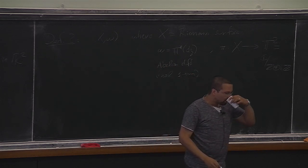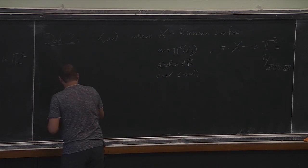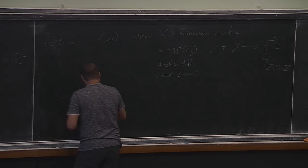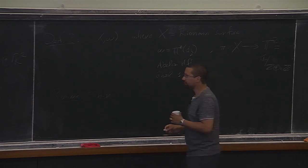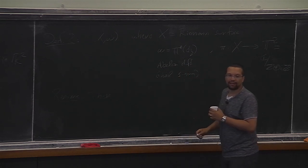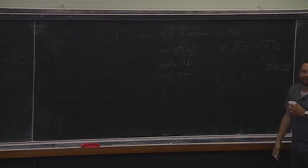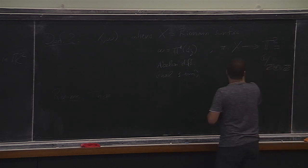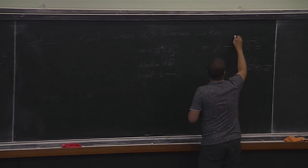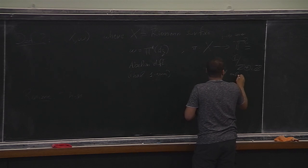This is another definition, and the remark here is that these definitions are equivalent. Is π part of the definition? Yes, π is part of the definition. When I write X, I'm assuming that my X is already a Riemann surface presented in that way — a Riemann surface coming from a cover which is branched, a finite cover, branched only at the origin.